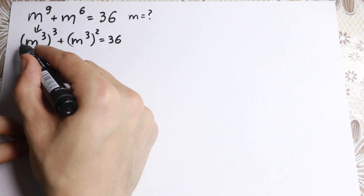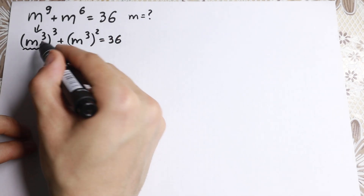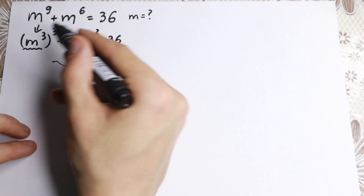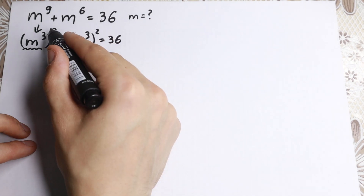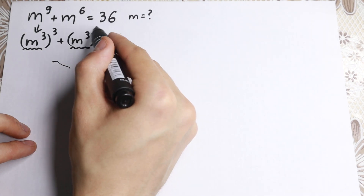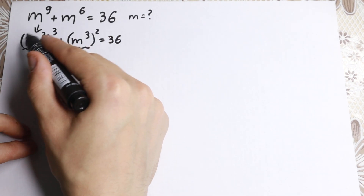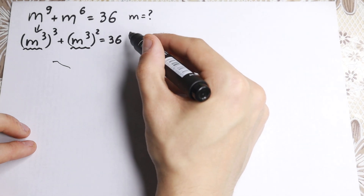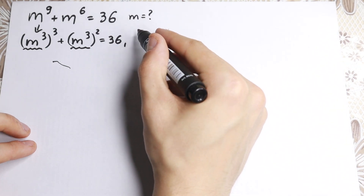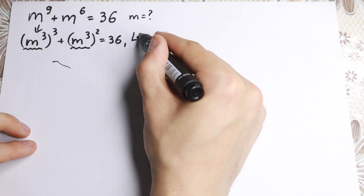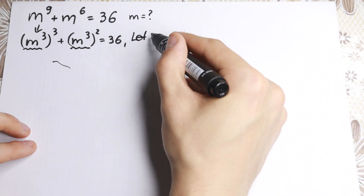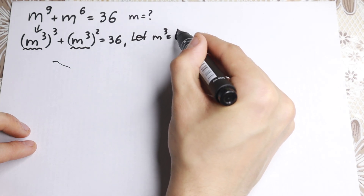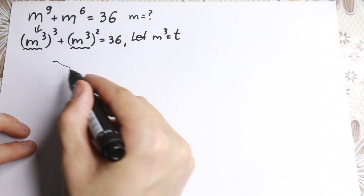If you look closely, this m-cubed and this m-cubed are the same element — maybe with different powers, but the same base. So if we work with substitution, let m-cubed equal t.